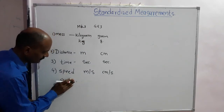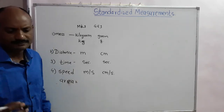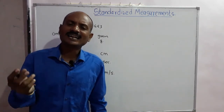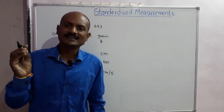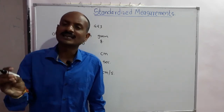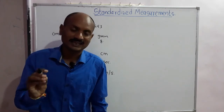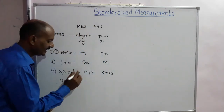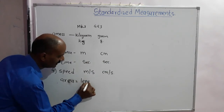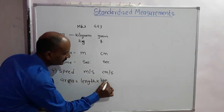To measure area, which physical quantities are used? The formula for area is length multiplied by breadth. So the unit of area is derived from the units of length.